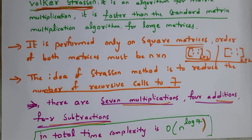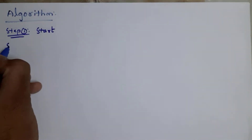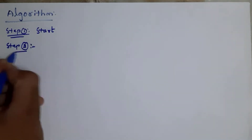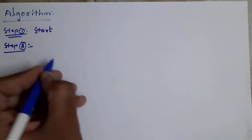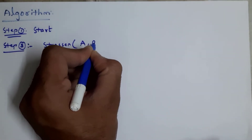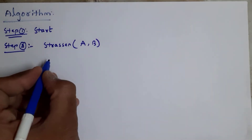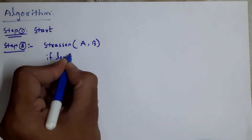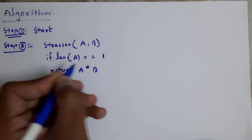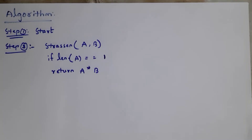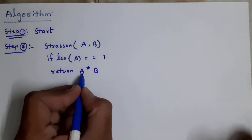Now I will read the algorithm for Strassen's matrix multiplication. Again, if you watch the algorithm directly you will not understand, so first learn the example and then go for the algorithm. Step 1 is Start. Step 2: we perform Strassen's matrix multiplication on two matrices — matrix A and matrix B. Write Strassen(A, B). We can perform matrix multiplication only if the length is greater than or equal to 1. If length of matrix A equals 1, then return A×B. If length is greater than 1, then we can perform matrix multiplication.